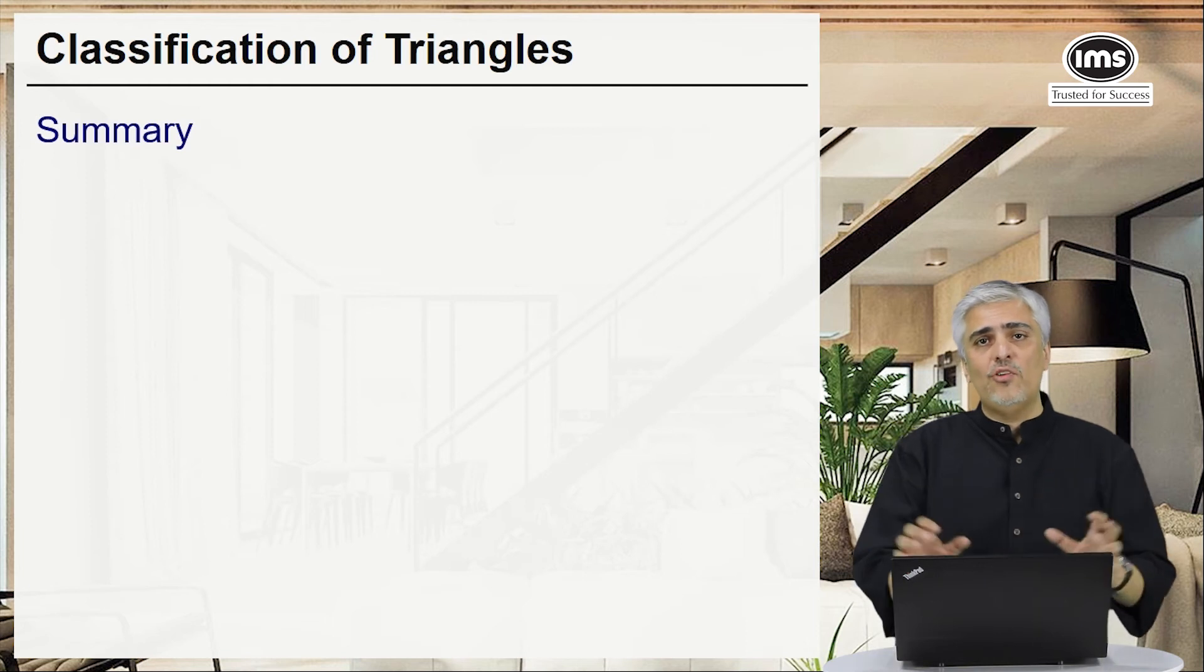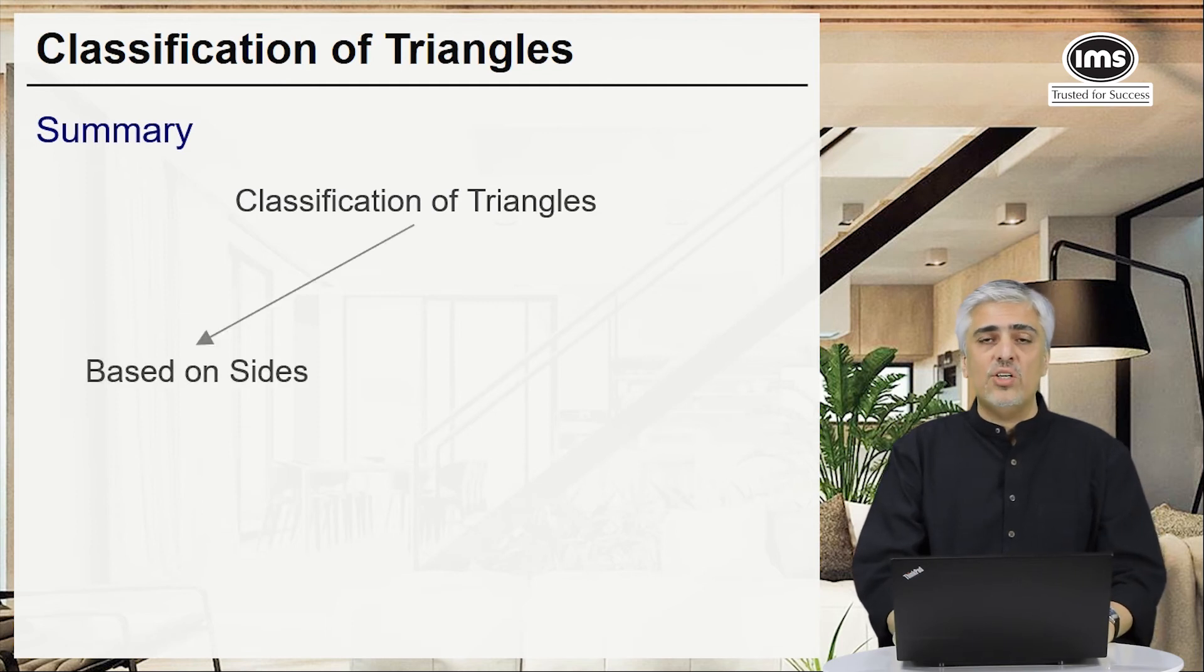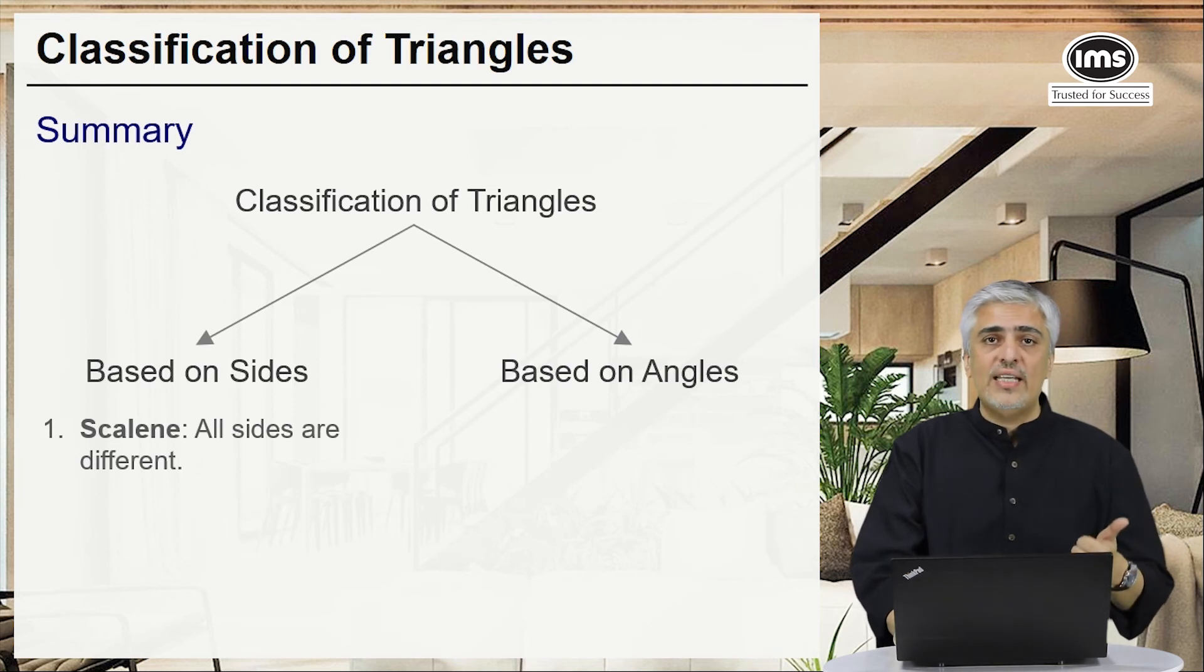Let's see a summary of all the different types we have seen. In classification of triangles, based on sides, we'll have three triangles. First, a scalene triangle where all sides are unequal and all angles are unequal.